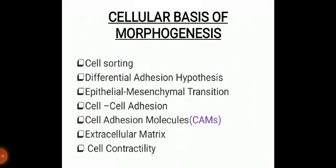The cellular basis of morphogenesis includes seven basic steps or mechanisms: cell sorting, differential adhesion hypothesis, epithelial-mesenchymal transition (also called EMT), cell-to-cell adhesion, cell adhesion molecules (also called CAMs), extracellular matrix, and cell contractility.